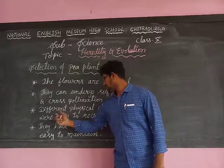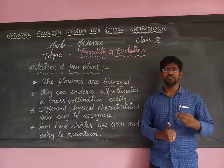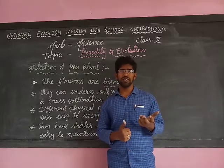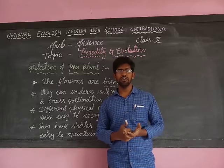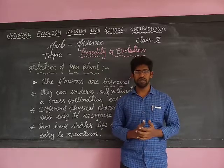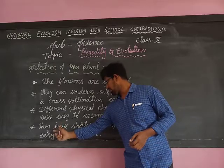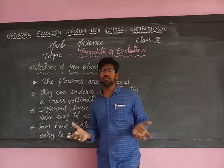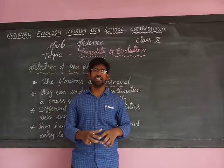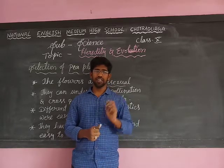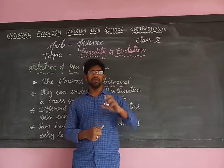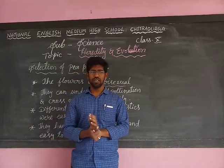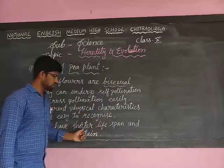Third, the different physical characteristics were easy to recognize. Different physical characteristics are present in the flowers of the pea plants, such as color, size, height, and shape. Fourth, pea plants have a shorter life span, which is very important. If they had a long life span — for example, a yearly crop — it would take too long to get results. Because of that reason, Mendel selected the pea plant, and within one year, three to four crops can grow, giving results three to four times per year.